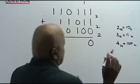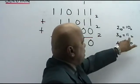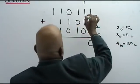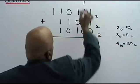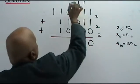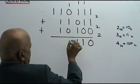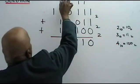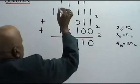1 plus 1 plus 1 is 3. 3 in base 2 is 11. So 1 plus 1 plus 1 is 11, carry 1. 1 plus 1 plus 1, 11, carry 1. 1 plus 1, 10. 100 carry 1.